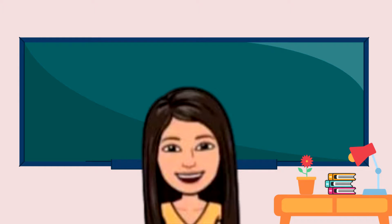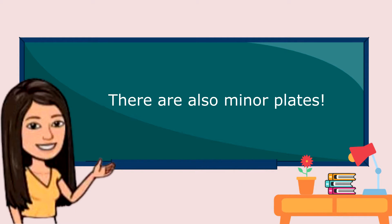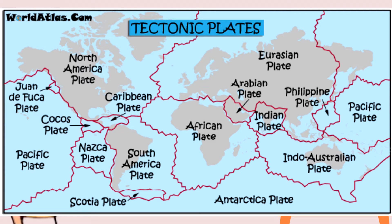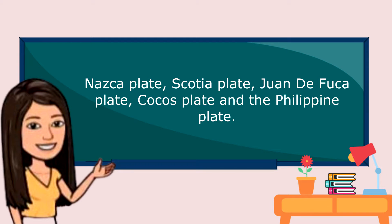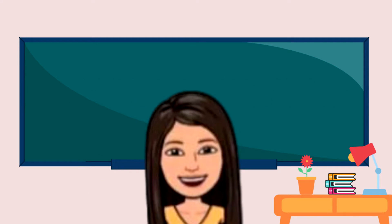Very good! In addition, there are also minor plates. Look at the illustration. What are some of the minor plates that you can see from the given picture? Can you give at least 5 minor plates? We have Nazca Plate, Scotia Plate, Juan de Fuca Plate, Cocos Plate, and the Philippine Plate. So there are relatively major plates and a number of minor plates including the Philippine Plate.